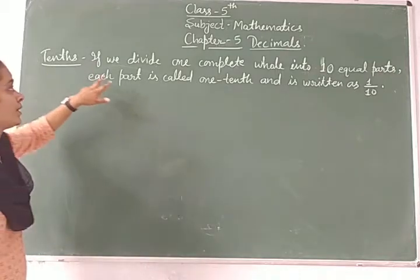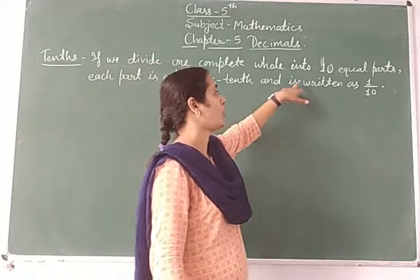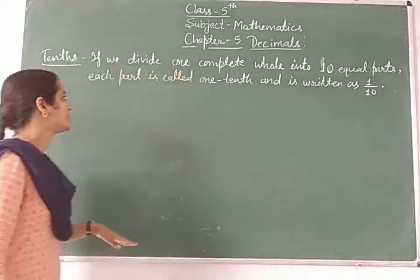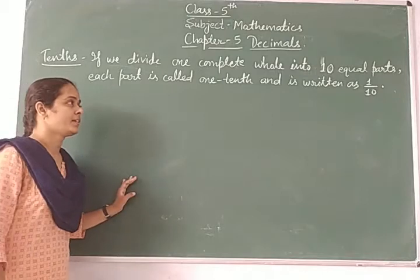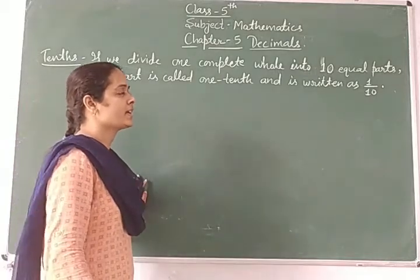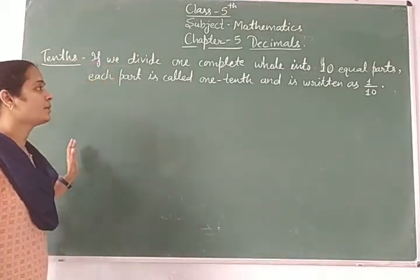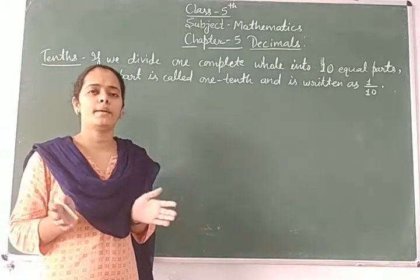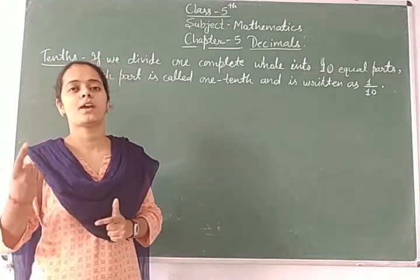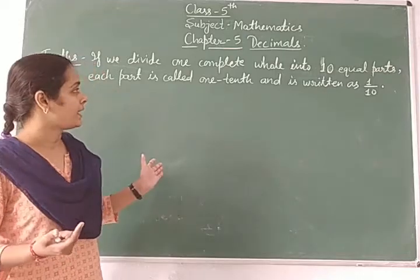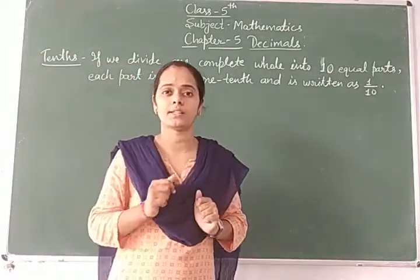What about tens? If we divide one complete whole into ten equal parts, each part is called one-tenth. It is written as one upon ten. One complete whole divided into ten parts — this is one-tenth, written as one upon ten.